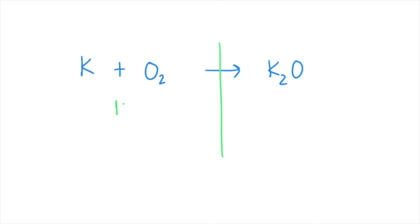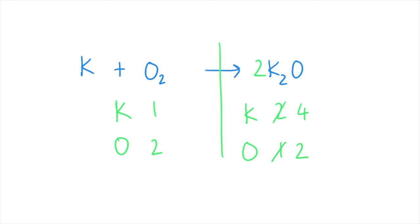Here we've got potassium and oxygen — same on the other side. One potassium, two oxygens, two potassiums, one oxygen. I'm not going to start with the oxygen because I can see that the oxygen comes in pairs on the left. So I'm going to put a two in front of the potassium oxide — make all the changes. The oxygens are balanced so I just need to balance the potassium. A four in front of potassium will sort that out.